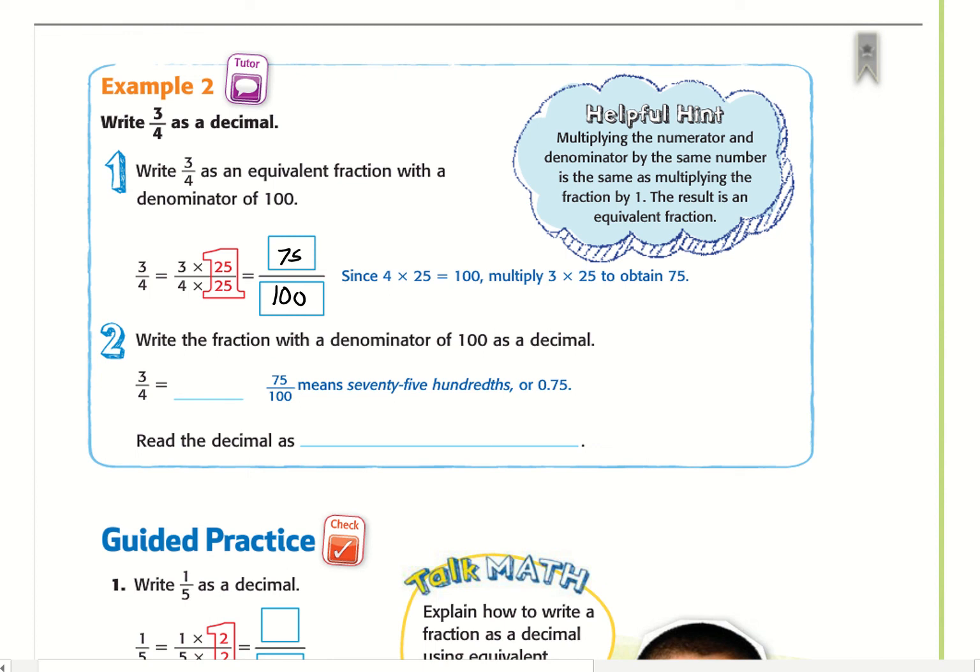So my decimal is going to end in the hundredths place. My decimal is 75 hundredths. Read the decimal as seventy-five hundredths.